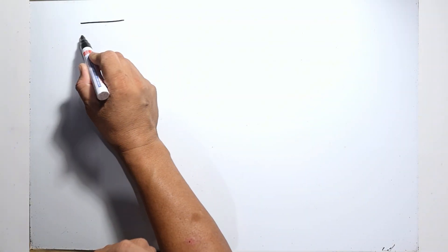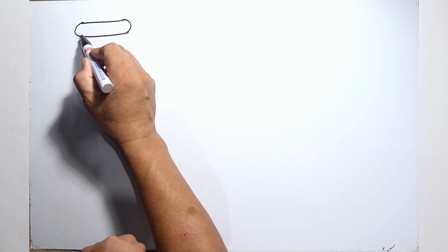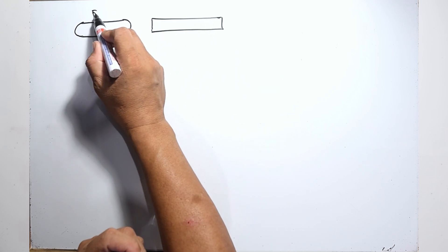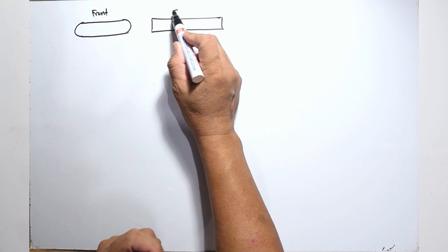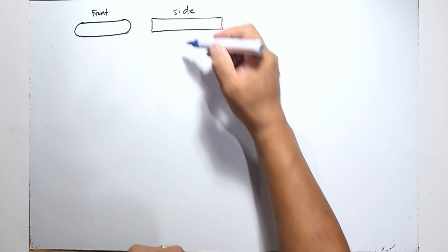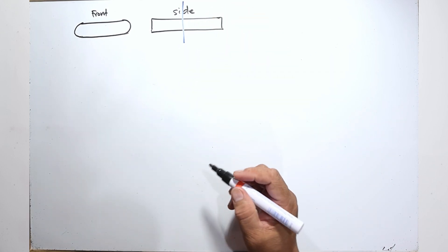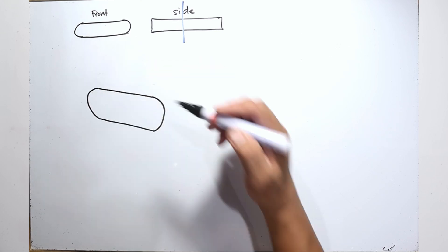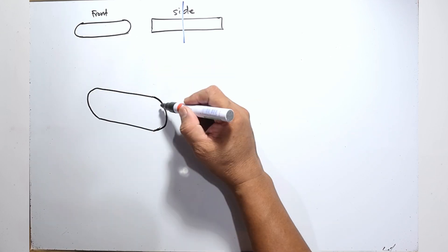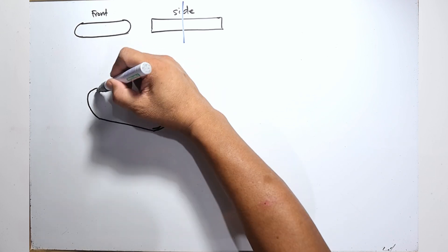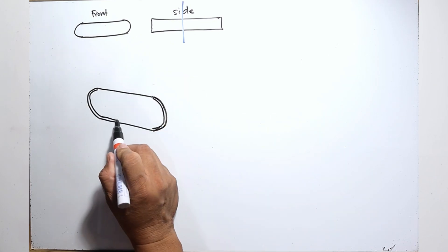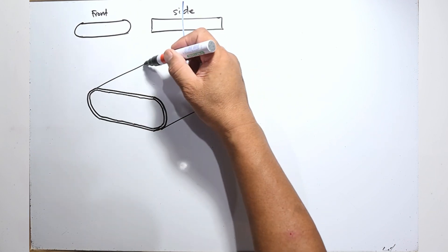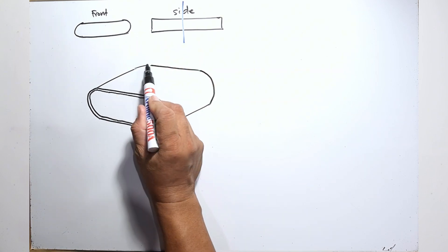This is the front view of the tank and this is the side view of the tank. Let's say we are going to cut a section here and draw the free body diagram. The concept of a thin-walled pressure vessel revolves around the interplay between the internal pressure and the tensile stress in the vessel walls.